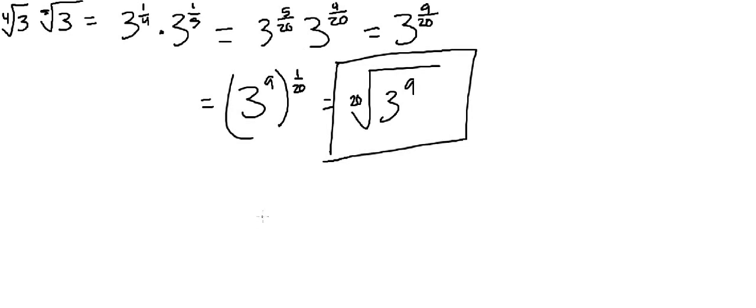So to recap, I find it easiest to get rid of the radical sign, deal with the fractions, and then revert back to the radical sign. There are other ways to do that, but this is just the way I recommend. This is the most intuitive for me.